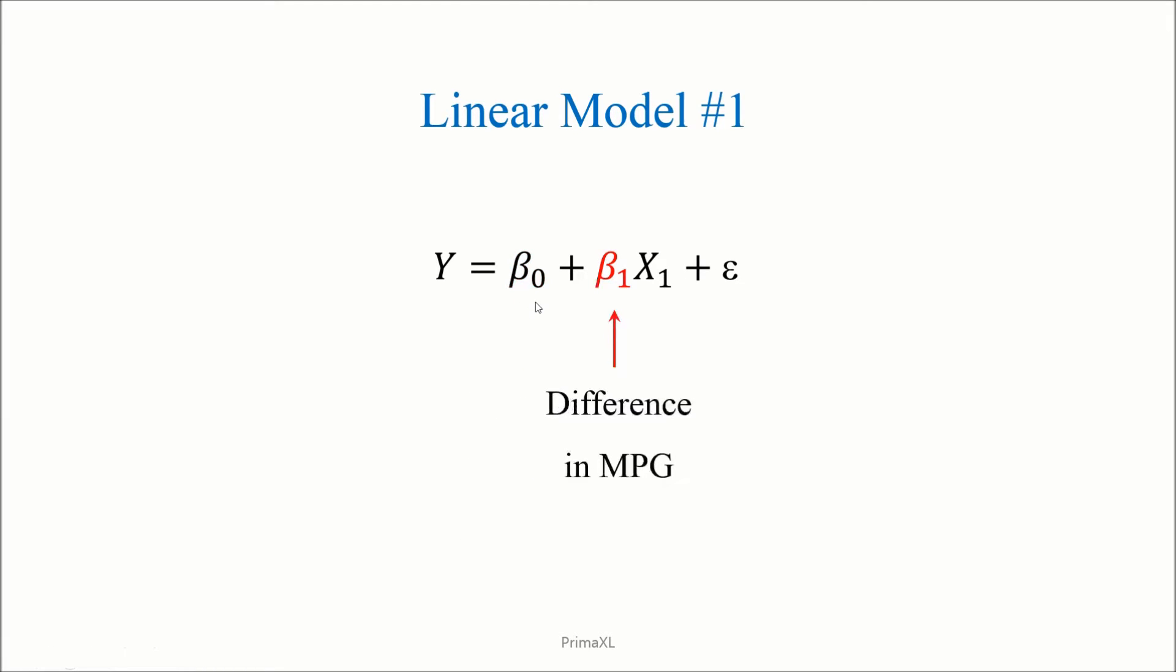Then, what is the meaning of the beta1? Let's remember that this term is ON when the transmission type is manual. So beta1 is the difference in the MPG for the manual transmission. If beta1 is positive, the manual transmission would have better MPG than the automatic. When beta1 is negative, the opposite would be true. Now, let's go to the Excel spreadsheet and fit the model coefficients.